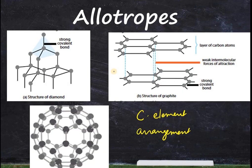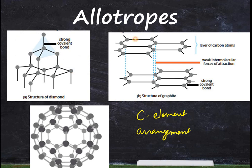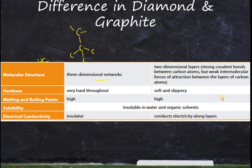In graphite, there is a very strong covalent bond within each layer that you cannot break easily. The weak bond in graphite is the bond between the two layers — layer one and layer two. Because this inter-layer bond is weak, the layers can slip and slide, which is why you can write on paper with it.